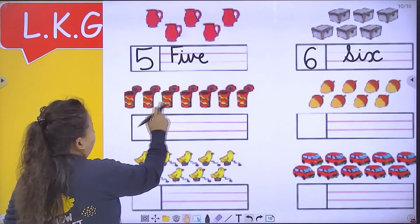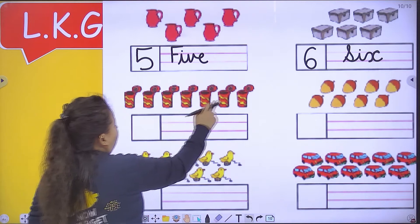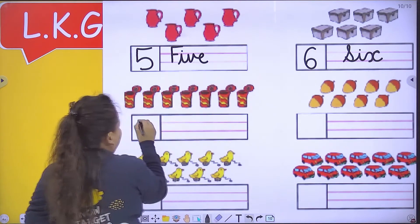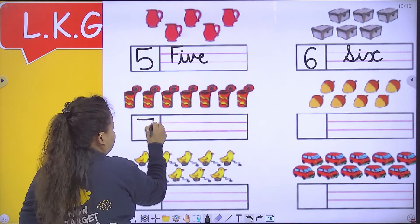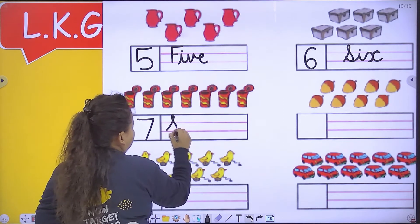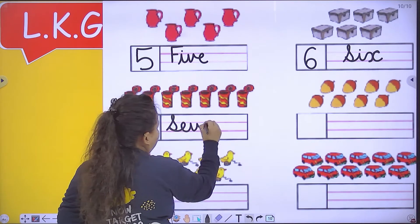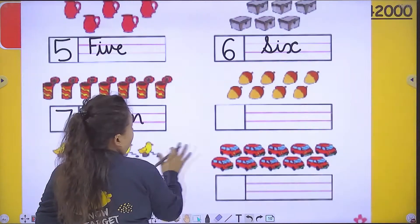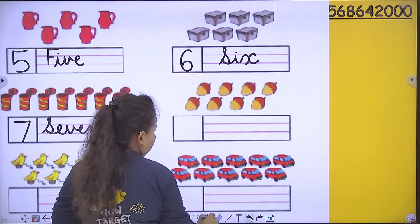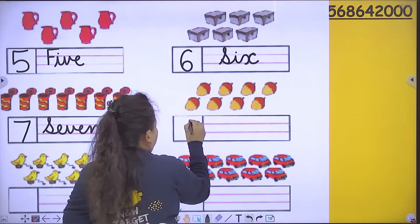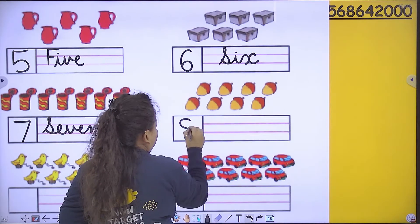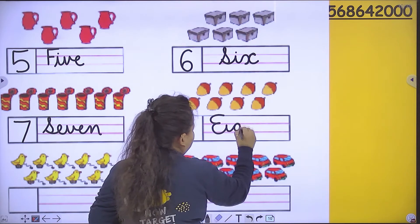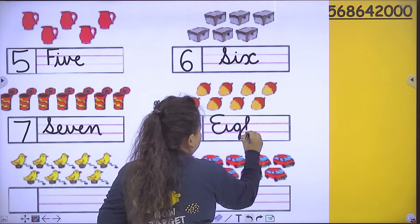One, two, three, four, five, six, seven. So the number of boxes is seven — S E V E N. Eight — E I G H T, eight.